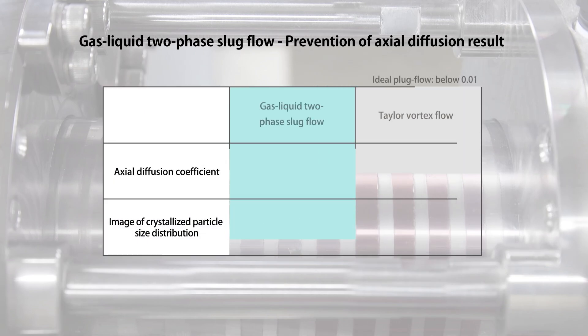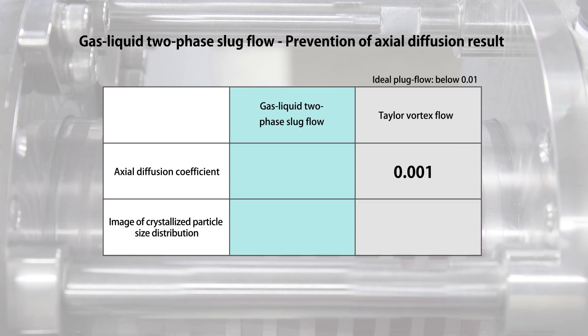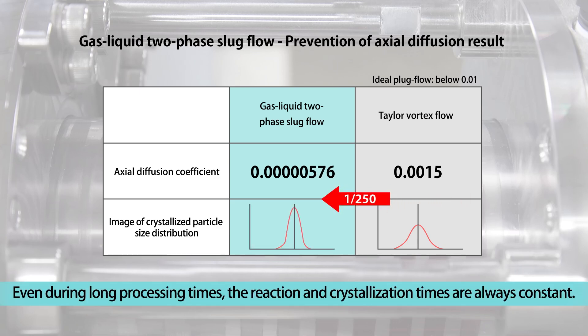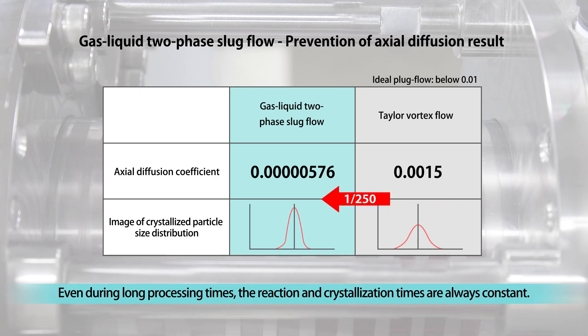Compared to a normal Taylor Vortex containing only liquid, the degree of diffusion of the gas-liquid slug flow is approximately 1/250, making it possible to further homogenize the particle size distribution. Especially in processes with long processing times, the influence of axial diffusion becomes significant, so gas-liquid slug flow is more effective.